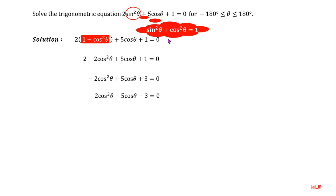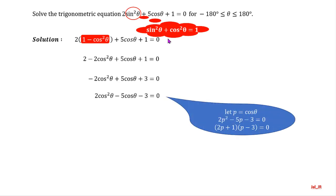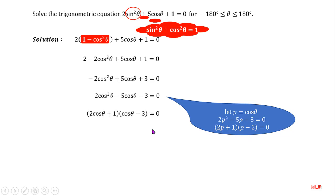Here, we can factorize the expression on the left side. If we let p equal cosine of theta, then the equation is equivalent to 2p squared minus 5p minus 3 equals 0. The factors are 2p plus 1 and p minus 3. So we have 2 cosine of theta plus 1, multiplied by cosine of theta minus 3, equal to 0. This means either one or both of the factors equal zero.